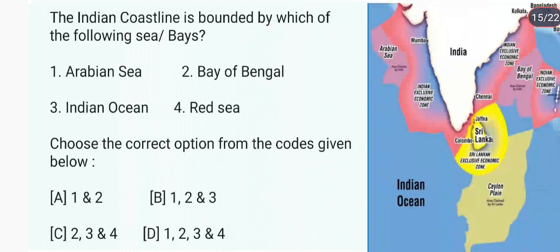The Indian coastline is bounded by which of the following seas or bays? Ye bound hai Arabian Sea, Bay of Bengal, aur Indian Ocean se. So the answer is 1, 2, and 3.